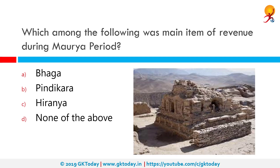Which among the following was the main item of revenue during the Maurya period? The correct answer is Bhaga. During the Maurya period, land revenues from rural areas were appropriated in the form of crown lands or Sita, land revenue or Bhaga from cultivators, taxes on orchards, ferry charges, etc.